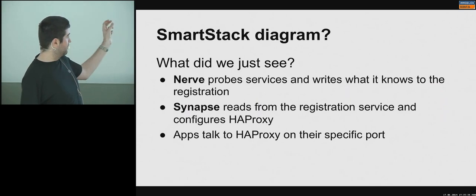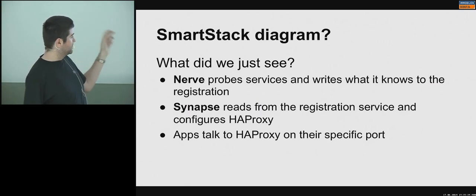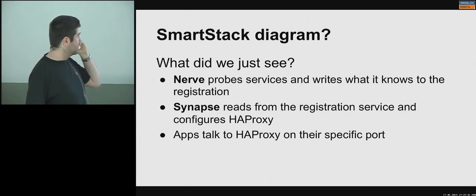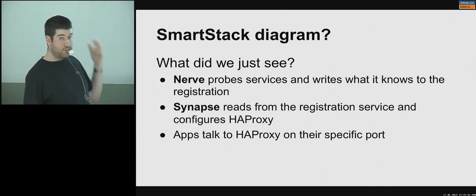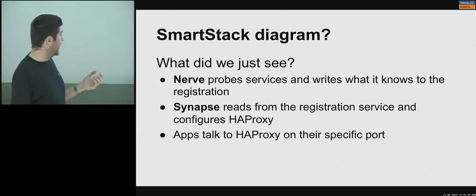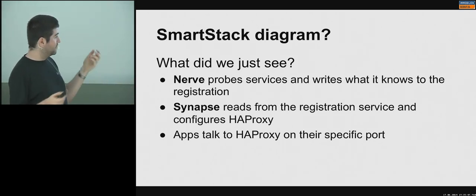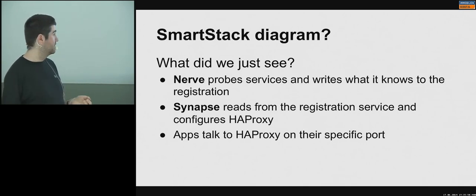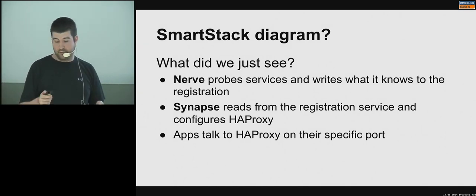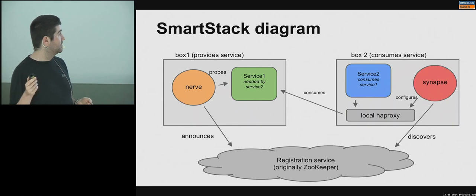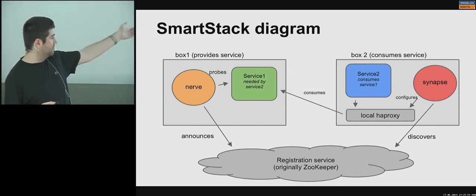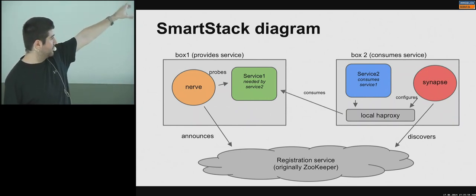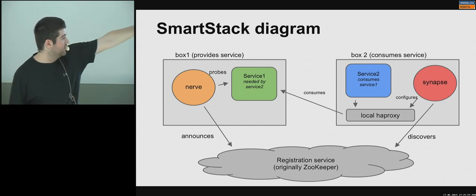The hard part is really just remembering the names: Nerve probes the services, and Synapse reads from the registration and configures HA Proxy. The apps just talk to HA Proxy. So: Nerve probes, Synapse discovers, and it all goes through.